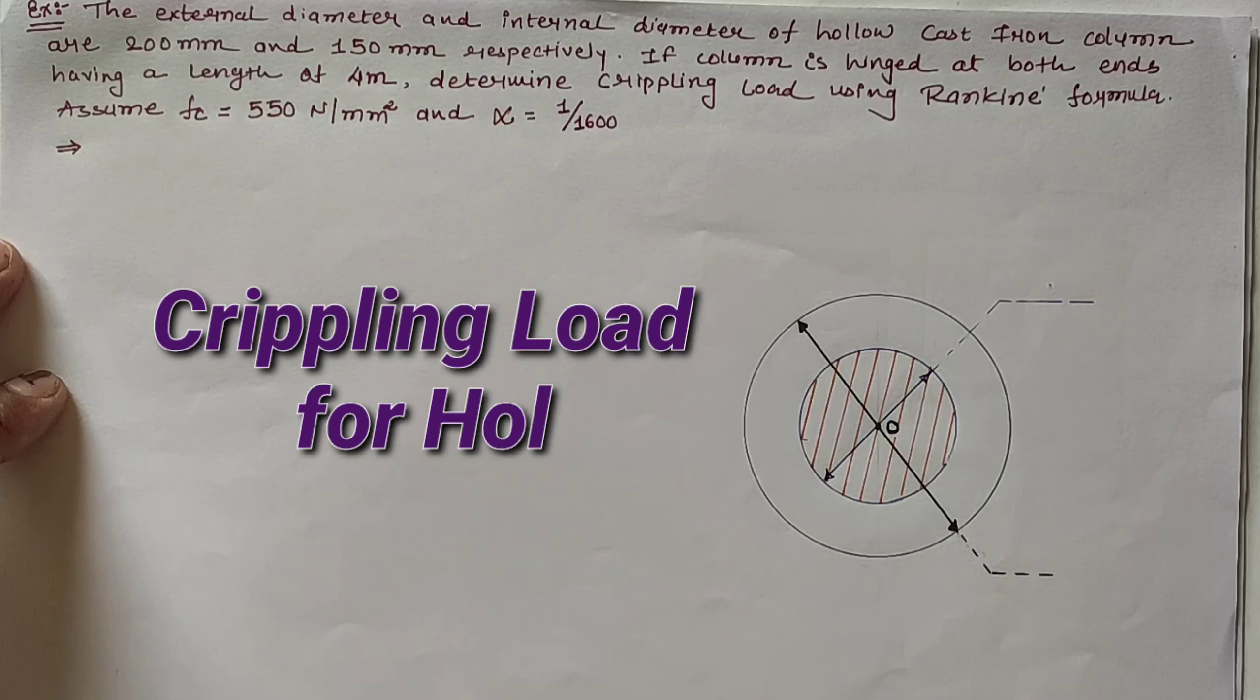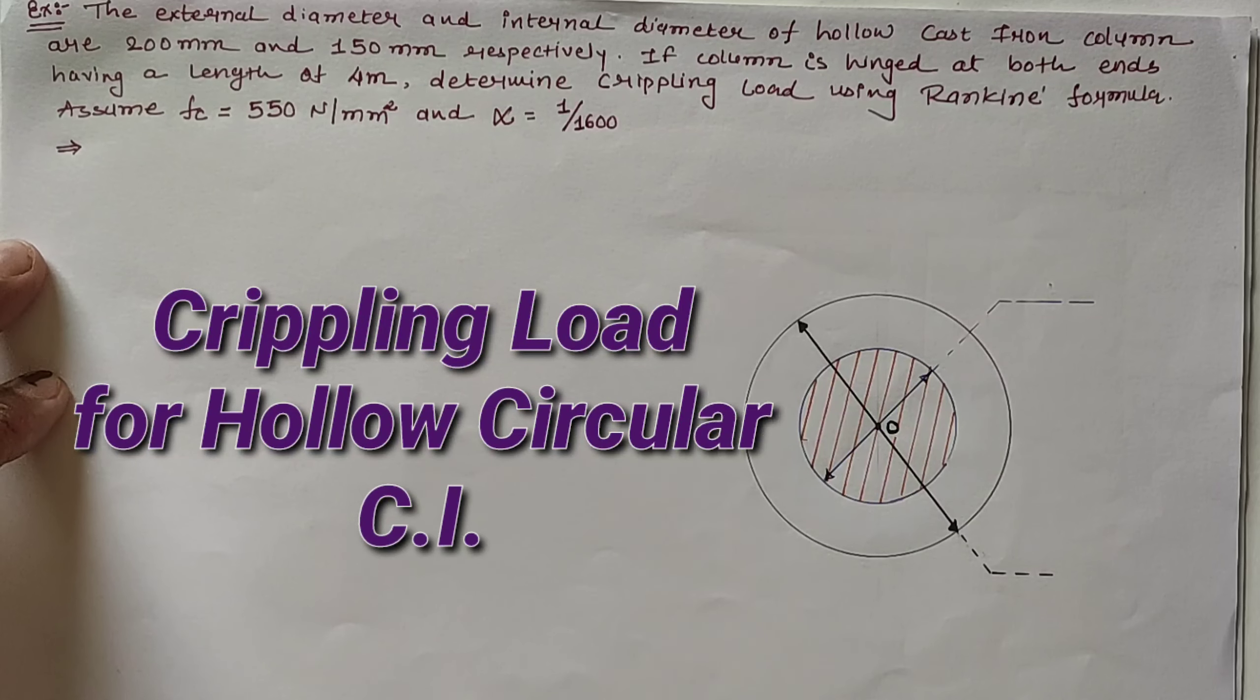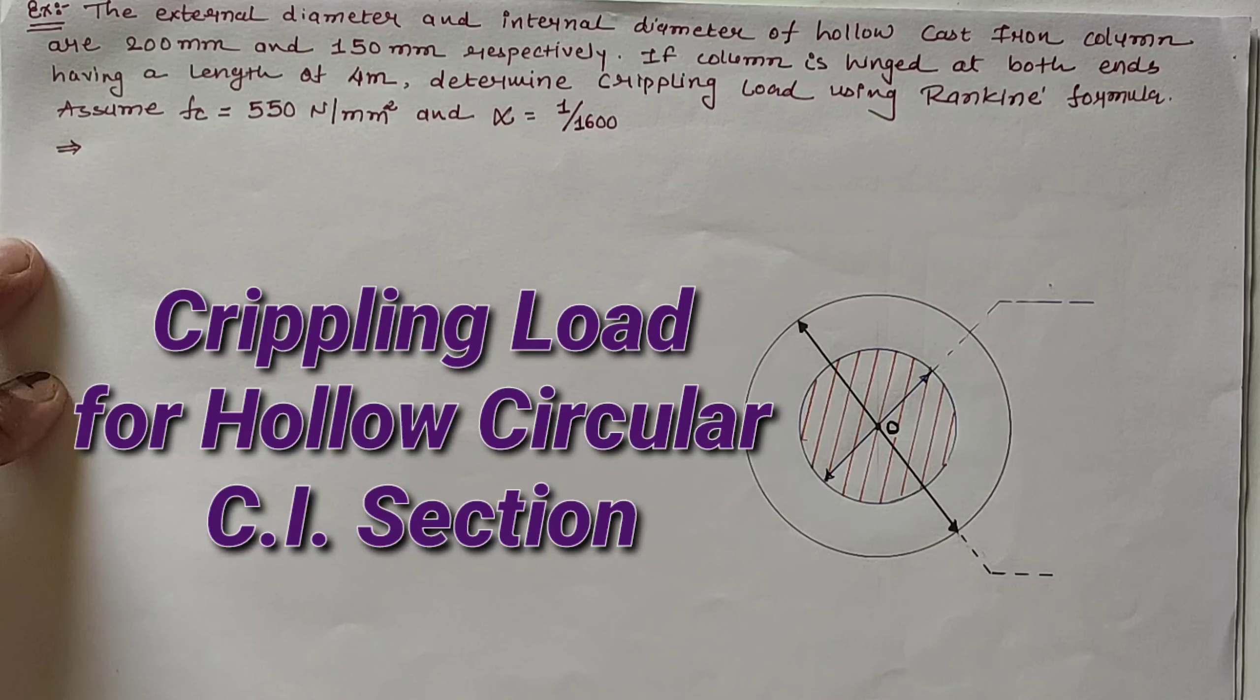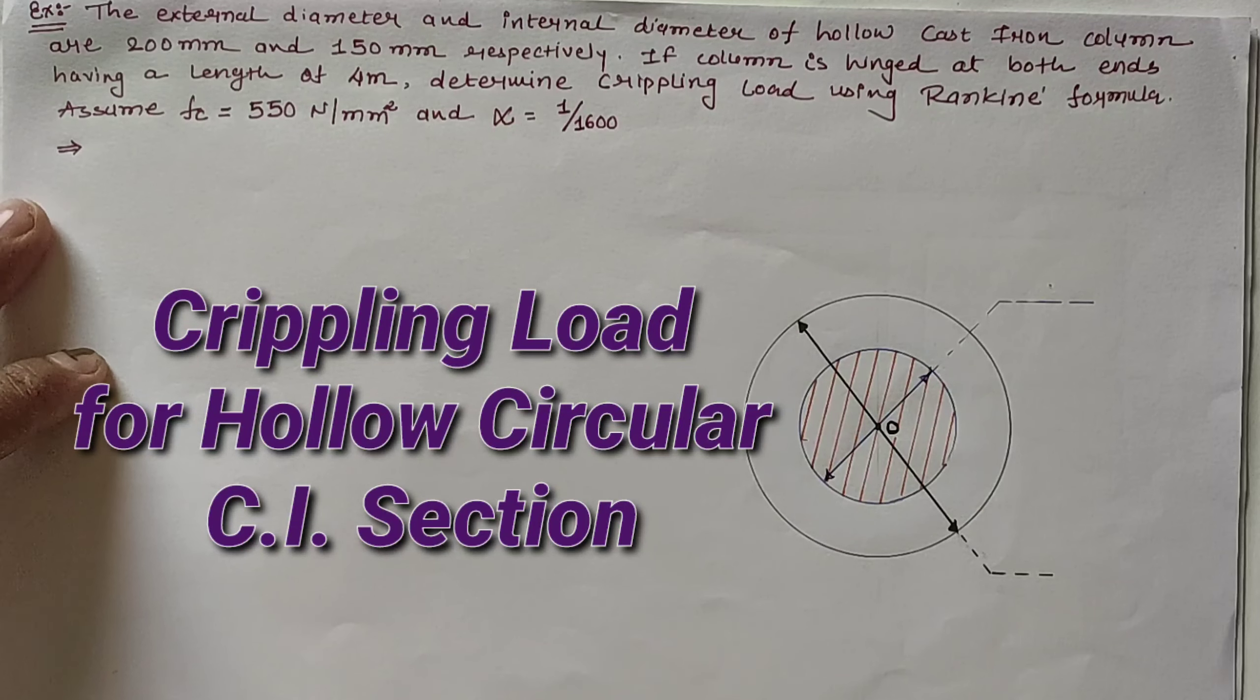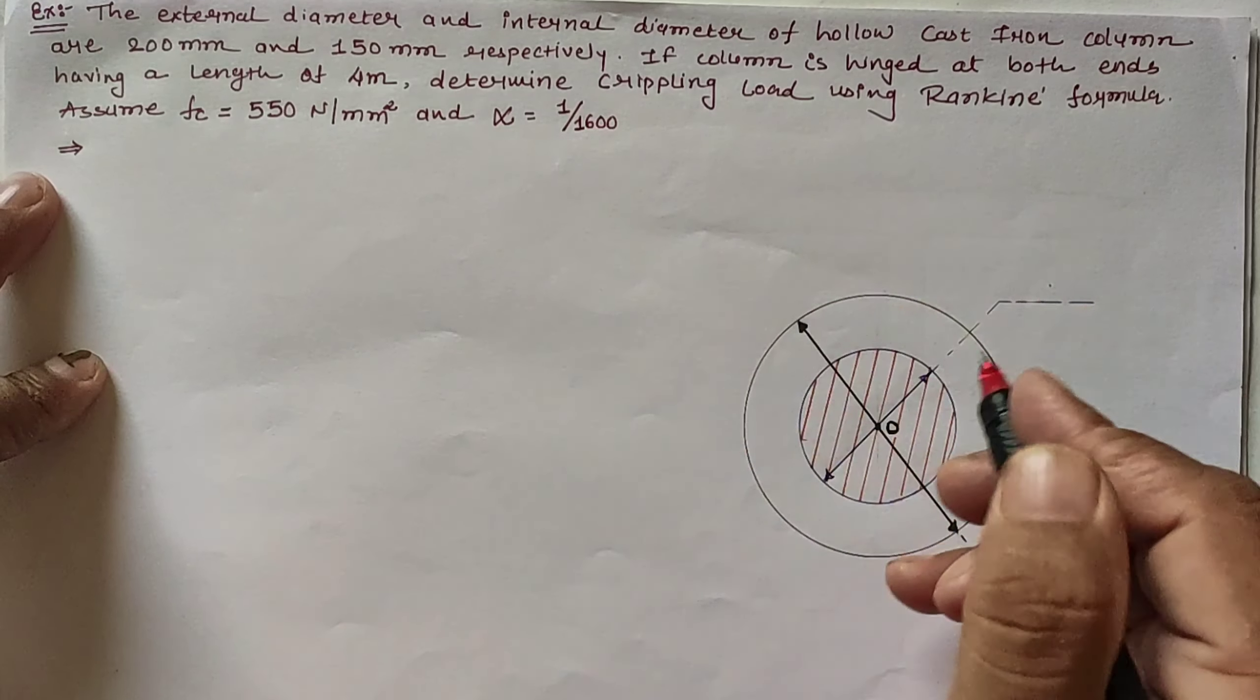Hello friends, today we are going to calculate the crippling load using Rankine's formula for a given hollow circular cast iron column section according to the given data.